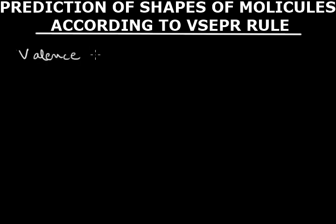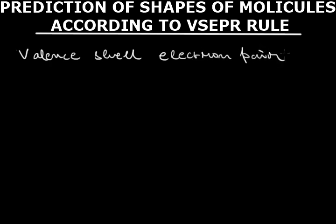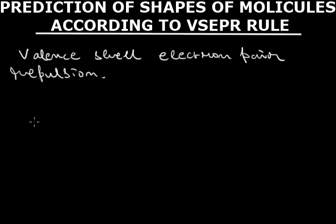Hello friends. Now we will discuss about the shapes of molecules according to VSEPR rule. The full form is Valence Shell Electron Pair Repulsion. According to this rule, we can predict the shape of molecules.